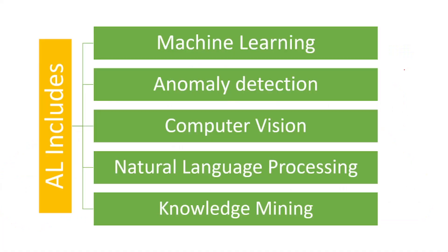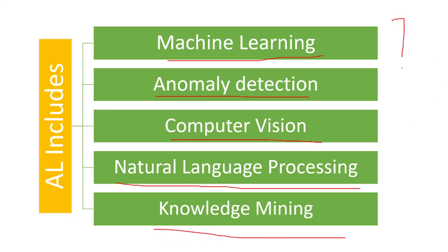Artificial Intelligence includes Machine Learning, Anomaly Detection, Computer Vision, Natural Language Processing, and Knowledge Mining. Let us see about all these five things in a gist, and in future videos we will be studying in depth about these.